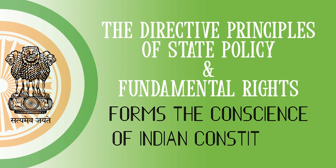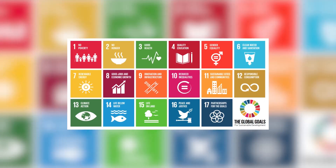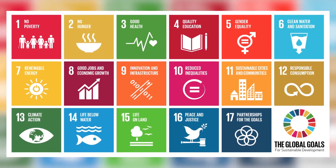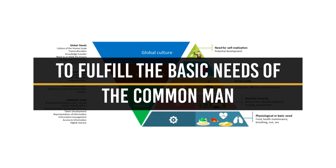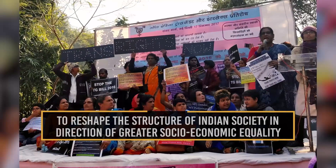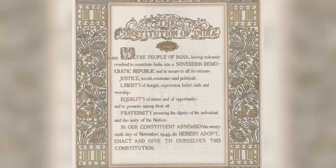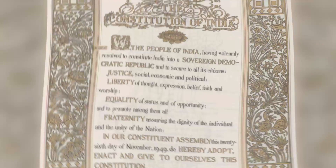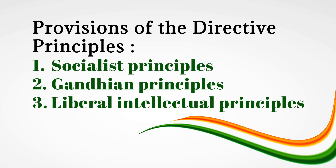DPSPs and fundamental rights form the consigns of the Indian constitution. The basic aim of the DPSPs is to set up the social and economic goals before the lawmakers, to bring about the socio-economic change in the country, to fulfil the basic needs of the common man, and to reshape the structure of the Indian society in the direction of greater socio-economic equality. Part 4 of the constitution deals with directive principles broadly classified into Socialist Principles, Gandhian Principles, and Liberal Intellectual Principles.